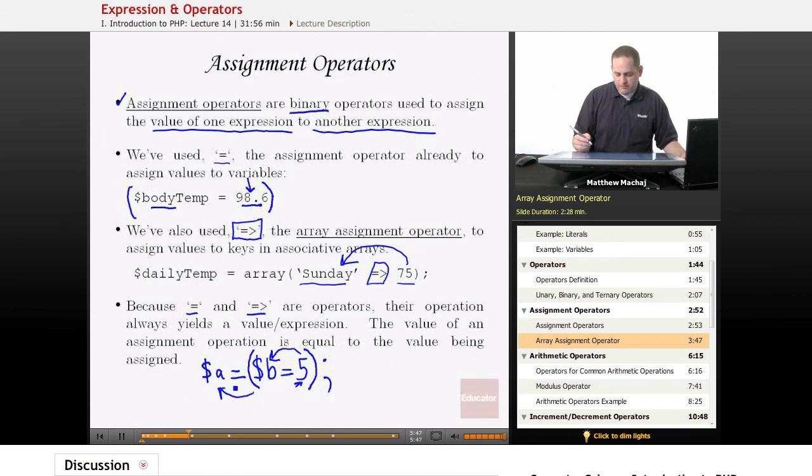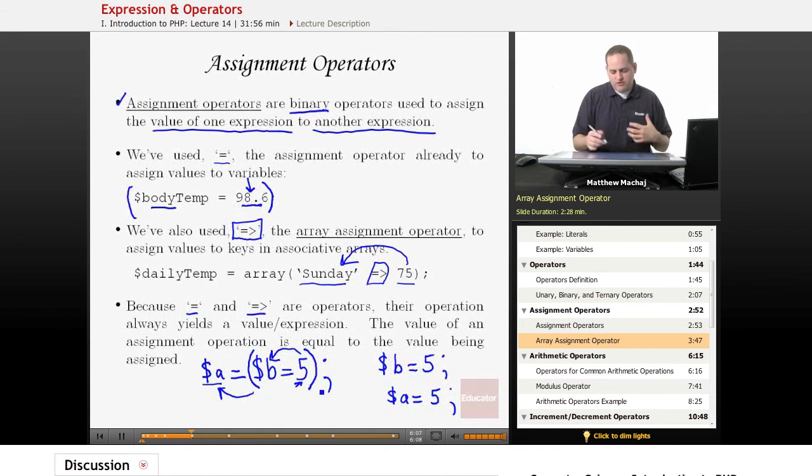Which makes sense, but it's essentially as if we had written it like this. If we had done it explicitly, because when we assign the value of A to the value of the operation, assignment operation B equals five.